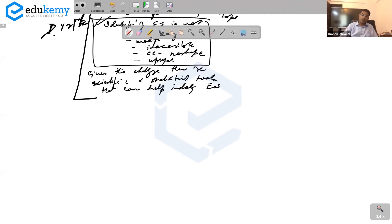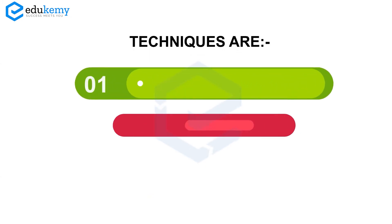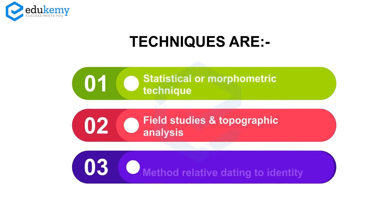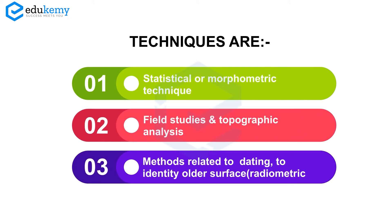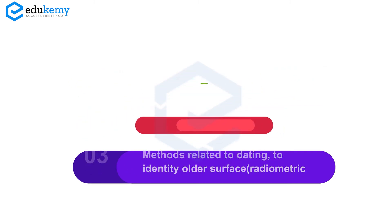What are the techniques? One is the statistical morphometric technique. There are field studies and topographic analysis. There are methods related to relative dating to identify older surfaces, and radiometric dating. These are the three main techniques.